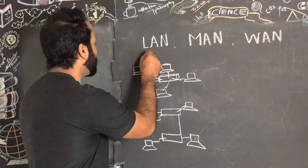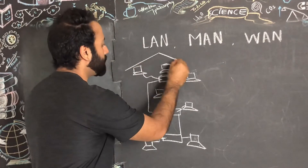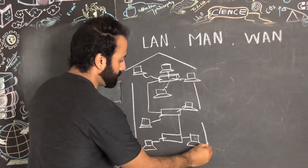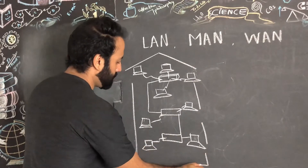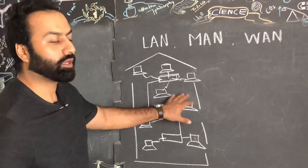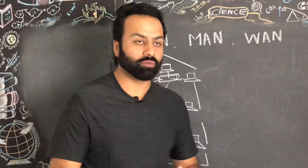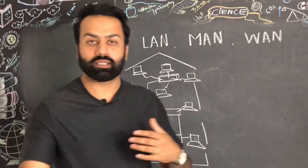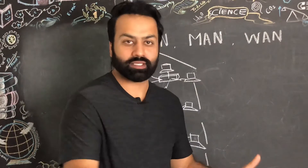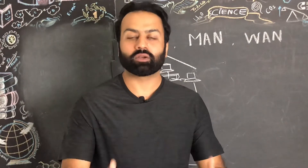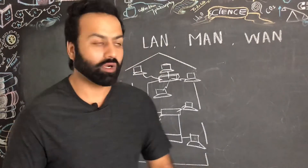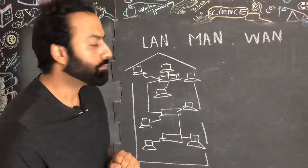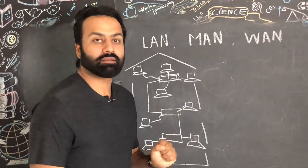All of these are in one building — this is called a Local Area Network. At home, if you have a switch and connect your devices in one place, that's also called a Local Area Network, or LAN. Now, what is MAN? MAN stands for Metropolitan Area Network.